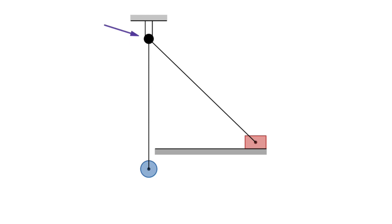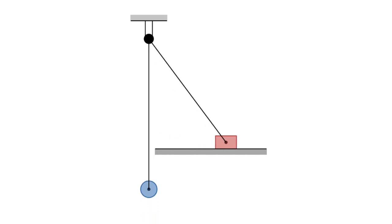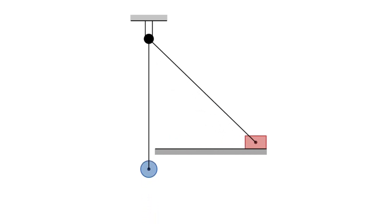Assuming that the block can't lift off the table, either because it has enough mass or because it's on a rail that keeps it down, then when the weight is allowed to drop, are the accelerations of the weight and the block equal or different? And if different, which one has the greater acceleration?